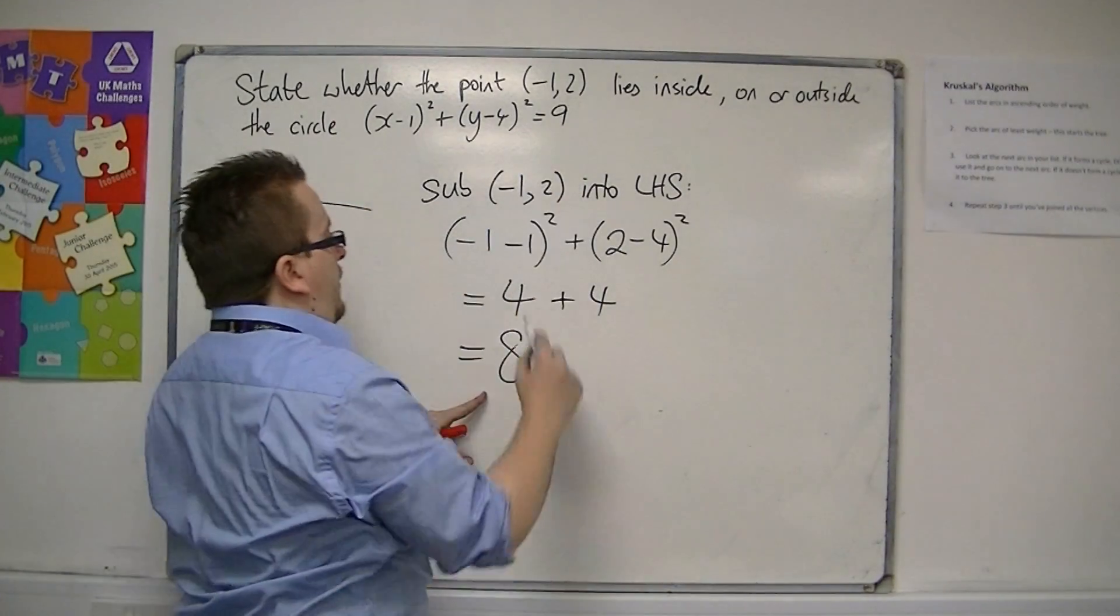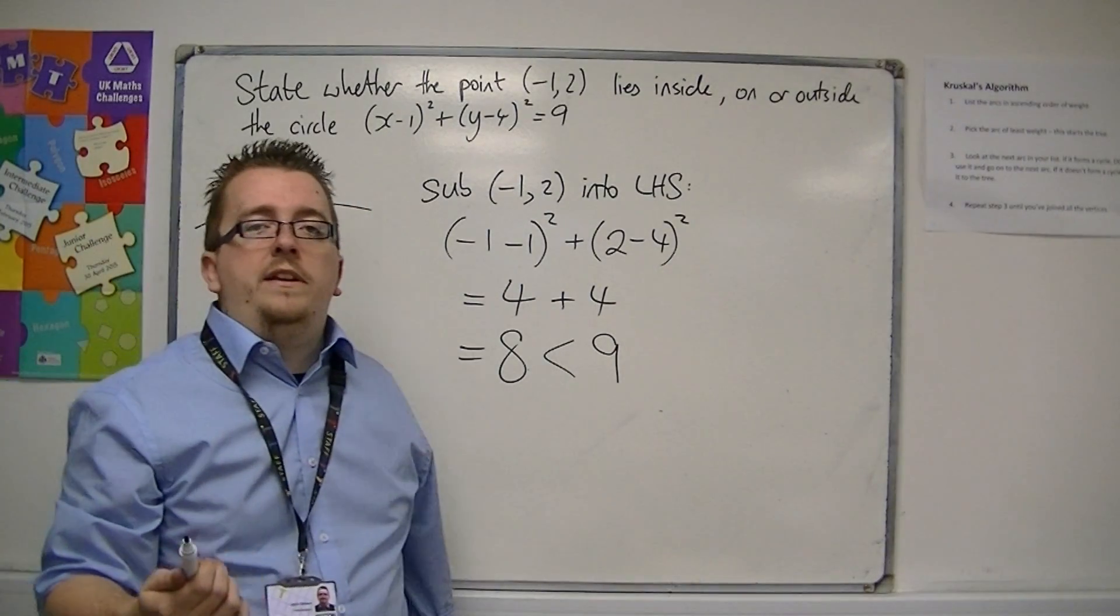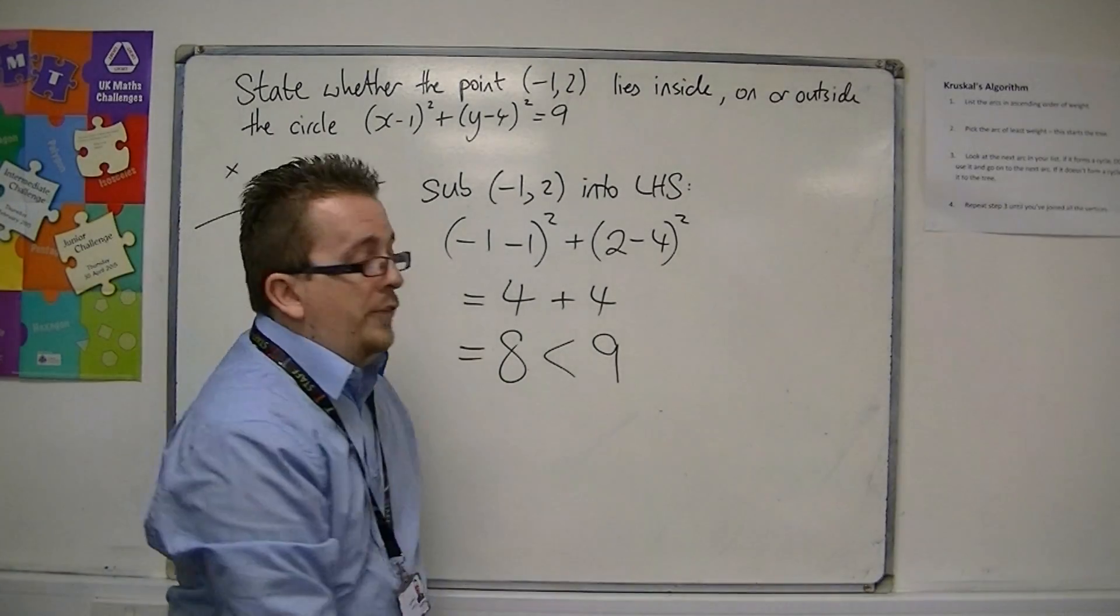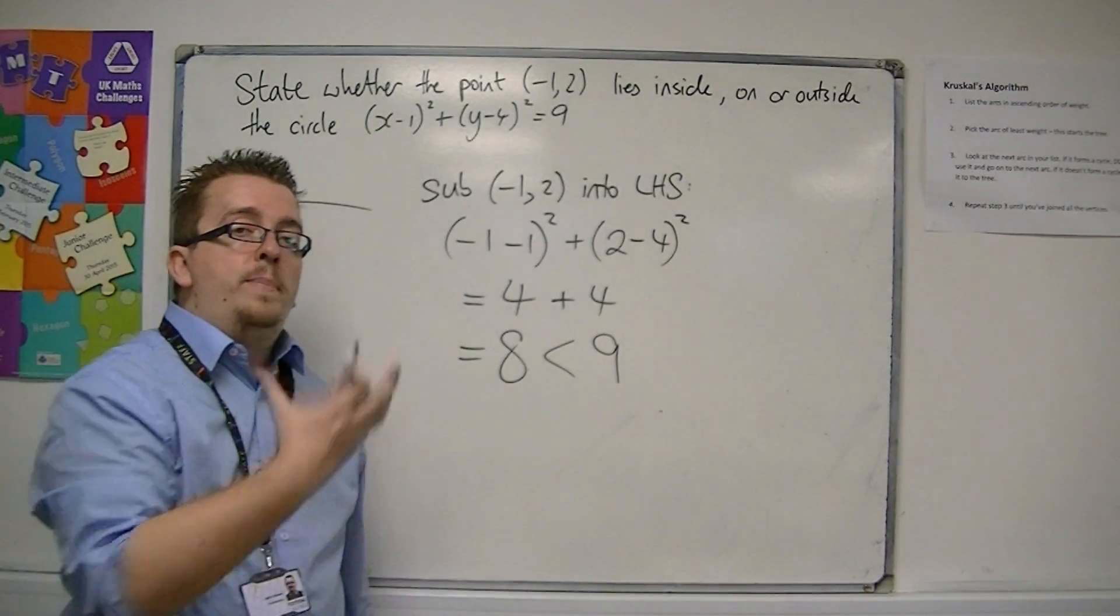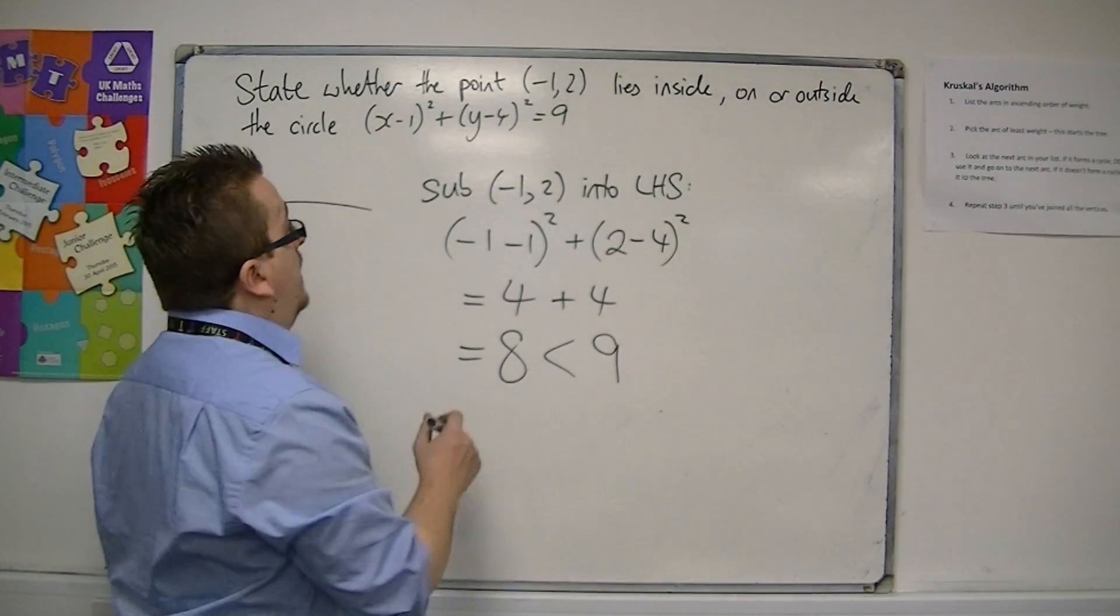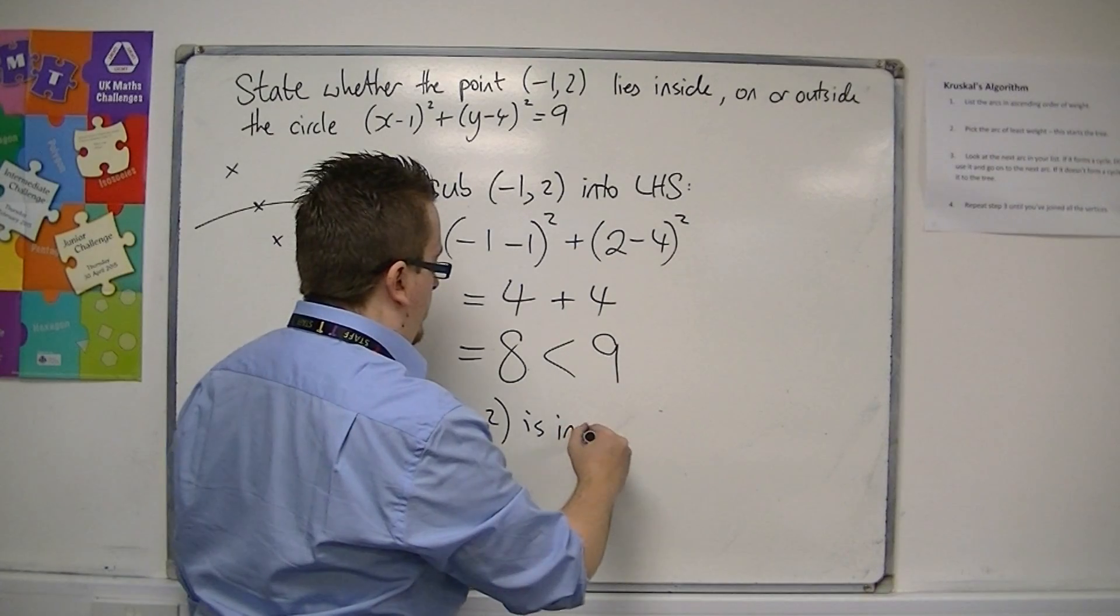Now 8 is less than 9. If we got it equal to 9, then we would be on the circle. If it was greater than 9, we would be outside the circle. So because it's less than 9, (-1, 2) is inside the circle.